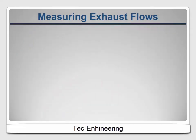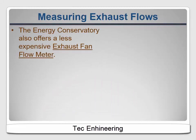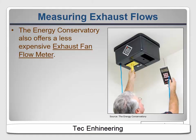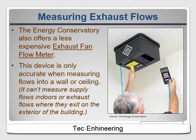The Energy Conservatory also offers a lower-cost alternative they call an exhaust fan flow meter. It's basically a plastic box with a gasket and an adjustable opening that works in conjunction with a digital pressure and flow gauge like the DG700. If you already own the gauge because it came with a blower door or duct blaster, you can buy the plastic box for $150. It's lightweight and easy to use, but it's only accurate for measuring exhaust air flowing into it — it won't give you a good reading for air coming out of a register.